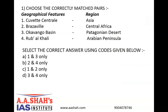Question number 1. Choose the correctly matched pairs of geographical features with their region. Number 1: Kuwait Central, Asia. Number 2: Brazzaville, Central Africa. Number 3: Okavango Basin, Patagonian Desert. Number 4: Rub al Khali, Arabian Peninsula.